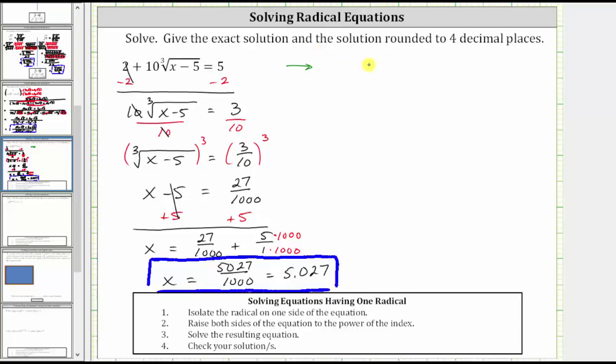Performing substitution, we would have two plus 10 times the cube root of 5027 over 1000 minus five equals five. This gives us two plus 10 times the cube root of 5027 over 1000 minus 5000 over 1000 equals five.